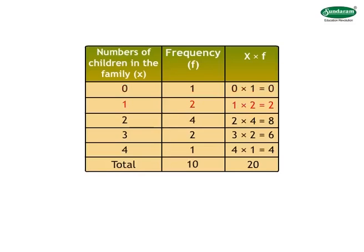Families with 1 child is equal to 2. Therefore, number of children in them is equal to 1 into 2 is equal to 2. Families with 2 children is equal to 4. Therefore, number of children in them is equal to 2 into 4 is equal to 8. Families with 3 children is equal to 2. Therefore, number of children in them is equal to 3 into 2 is equal to 6. Families with 4 children is equal to 1. Therefore, number of children in them is equal to 4 into 1 is equal to 4.